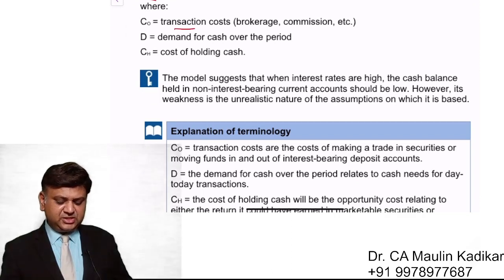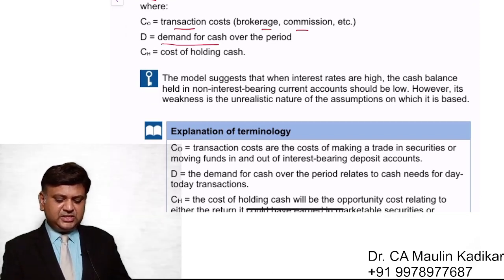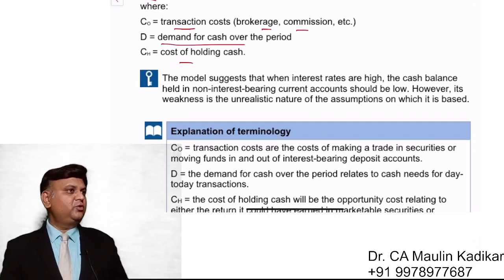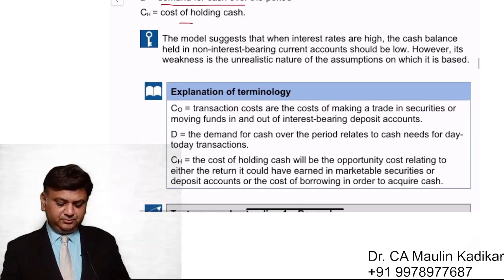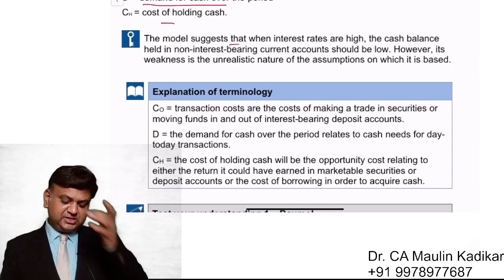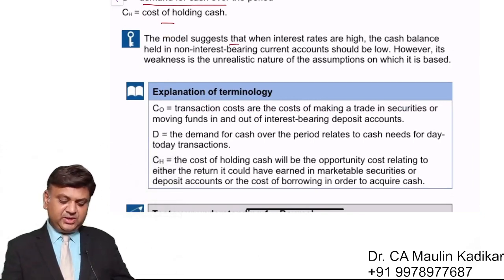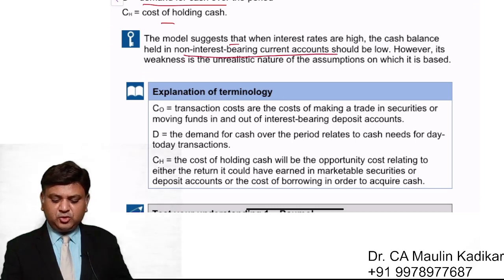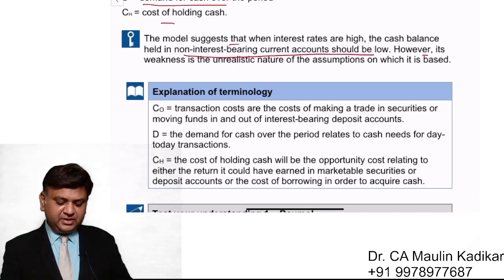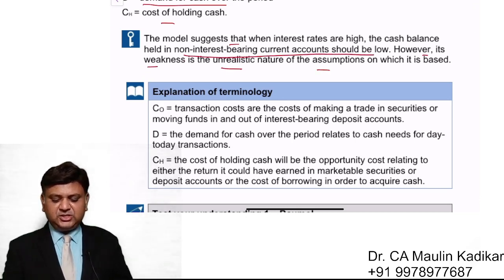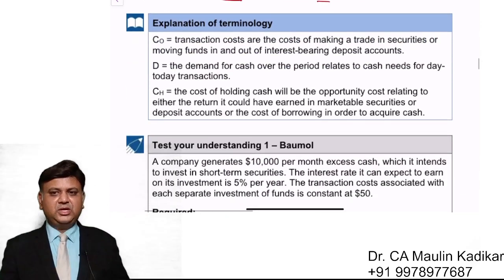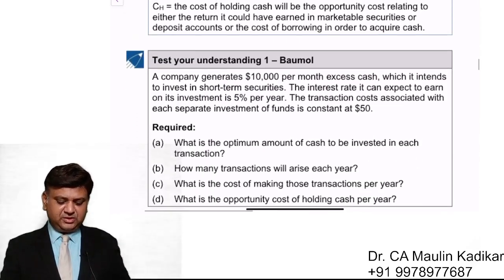In the formula: Co is the transaction cost or brokerage commission; D stands for the demand of cash; and Ch is the cost of holding cash, i.e., the rate of interest. The model suggests that when interest rates are high, the cash balance in the non-interest-bearing account should be low. However, its weakness is the unrealistic nature of its assumptions — that is one of the key limitations.